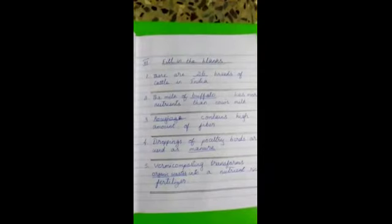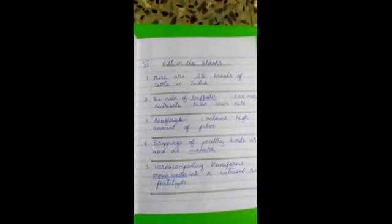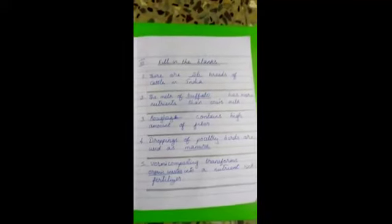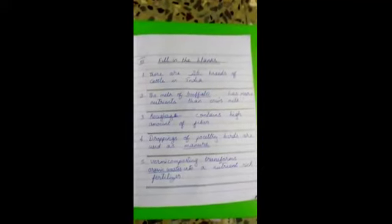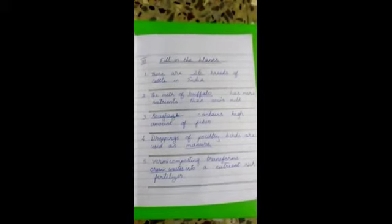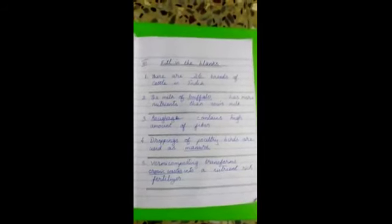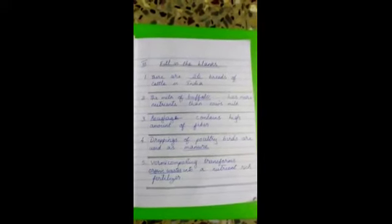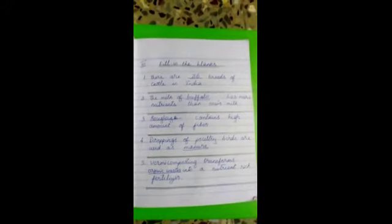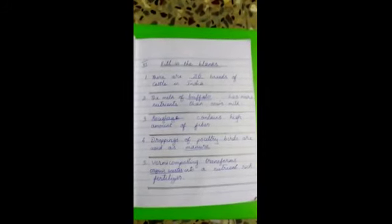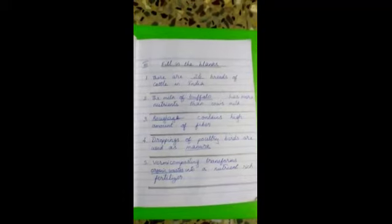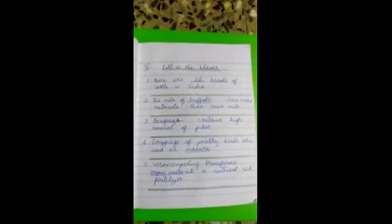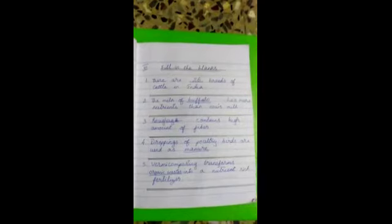Third one, dash contains high amount of fiber. Roughage. Next, fourth one. Droppings of poultry birds are used as dash. Manure. The fifth one, vermicomposting transforms dash into a nutrition-rich fertilizer. Organic wastes. Okay, finish writing. Fill in the blanks. After you finish the words, put the lines like that in the video.